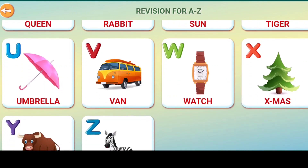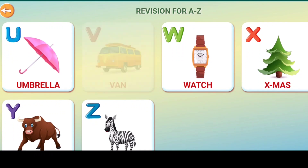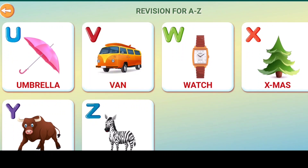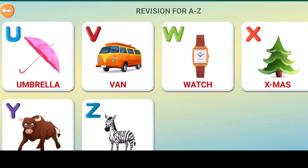U for umbrella, V for van, W for watch, X for X-mas tree, Y for yak, Z for zebra.